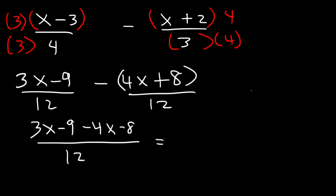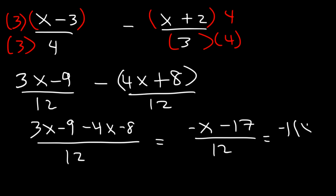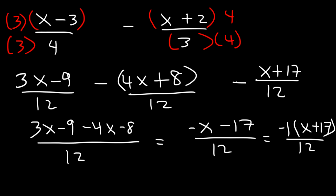So 3x minus 4x is negative x, and negative 9 minus 8 is negative 17. If we take out a negative sign, that gives negative 1 times x plus 17 over 12. So we can write the final answer as negative x plus 17 over 12 — you can place the negative sign out front. That's the answer.